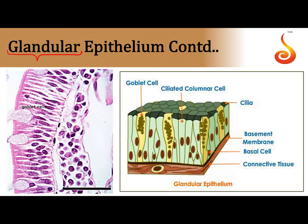You can classify glandular epithelium into unicellular glandular cells as well as multicellular glands. Here you can see how each cell in the epithelium — a single cell that looks like a wine glass — is referred to as the goblet cell. Notice how the goblet cell is producing a secretion.